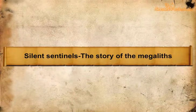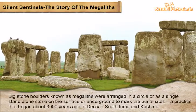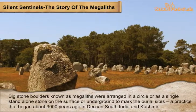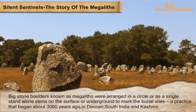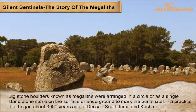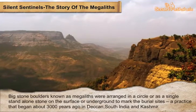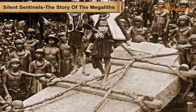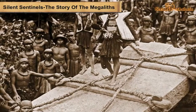Silent Sentinels: The Story of the Megaliths. Big stone boulders known as Megaliths were arranged in a circle or as a single stand-alone stone on the surface or underground to mark the burial sites, a practice that began about 3,000 years ago in Deccan, South India and Kashmir. There were a couple of actions people carried out to make Megaliths.